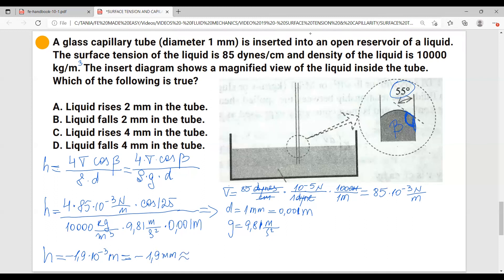Approximately 2 millimeters, which is almost 2 millimeters. And the sign, the negative, means that the liquid falls 2 millimeters in the tube. So the answer is B.